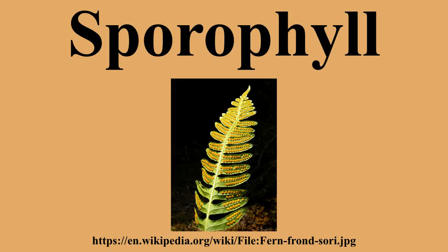Plants that produce sporophylls include Alaria esculenta, a brown alga that shows sporophylls attached near the base of the alga. Lycophytes, where sporophylls may be aggregated into a strobilus or distributed singly among sterile leaves — sporangia are borne in the axil or on the adaxial surface of the sporophyll.